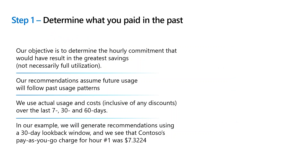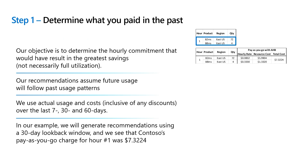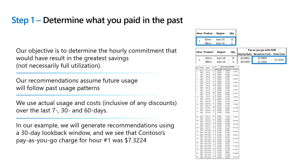We start by looking at usage. When we look at Contesso's usage over 720 hours, we go through hour one, hour two, all the way down and record what they actually spent. In this example, they spent a little over seven dollars — $7.32 and fractions. We do this for all the remaining hours within the 30-day lookback period, which is 720 distinct hours.